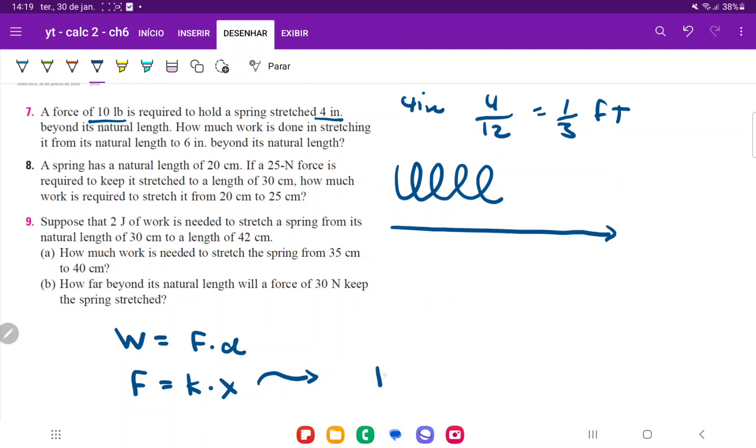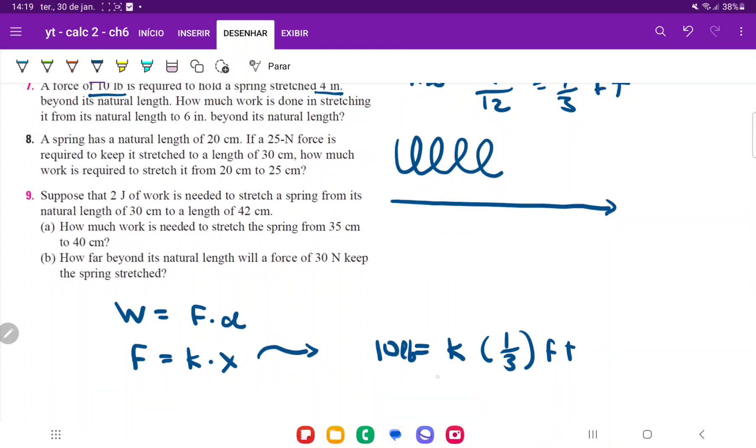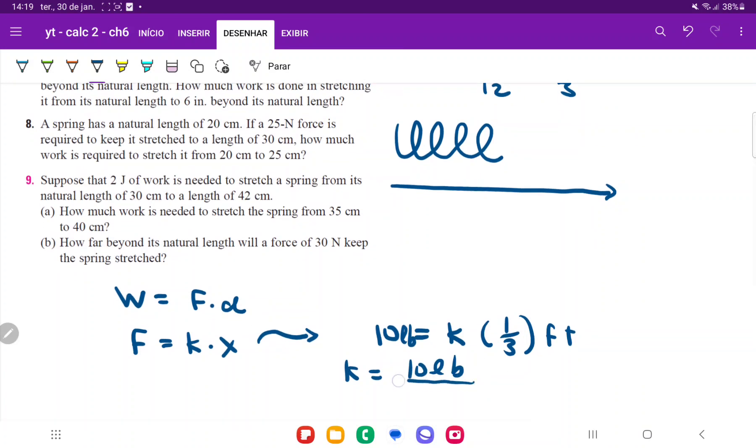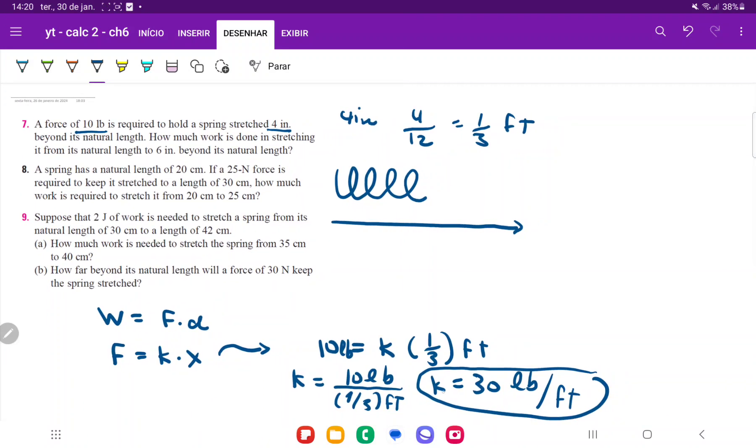So we're given that a force of 10 pounds is required to hold the spring. So we don't know what k is, but we do know what x is, and that is one third. I'm going to put units here. So 10 pounds. And so now we just need to find k for this. So k, if we divide it out, k is going to be 10 pounds divided by one third foot. And thus k is going to be equal to 30 pound per feet. So that is the constant for this spring here. So we use the force equation to find out the constant.